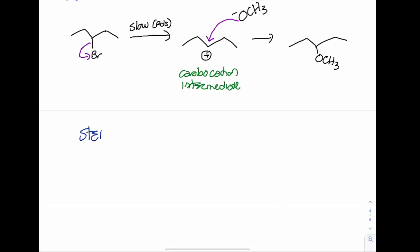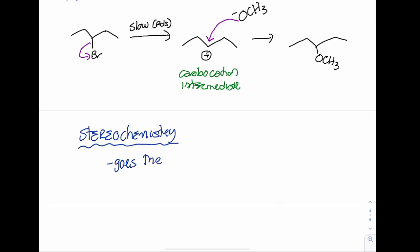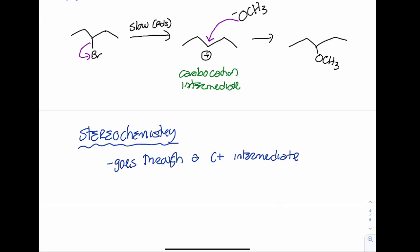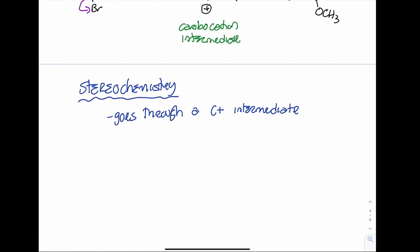I do want to look at the stereochemistry of this reaction. The big difference between SN1 and SN2 is that SN1 goes through a carbocation intermediate — C+ for carbocation. So my nucleophile isn't adding to an sp3 hybridized carbon like in an SN2 mechanism; what it's adding to is an sp2 hybridized carbocation intermediate.